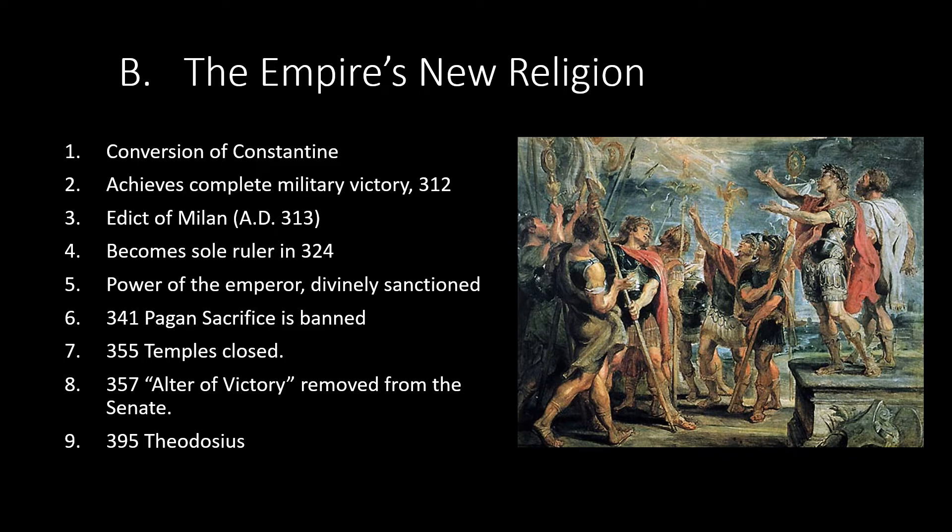In 395, Theodosius as emperor made Christianity the official religion of Rome.